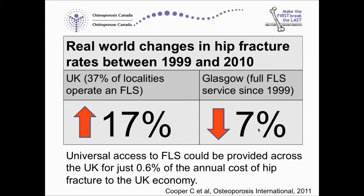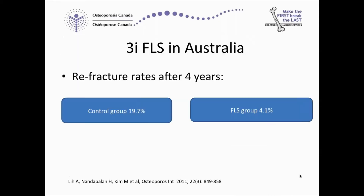This translated into real-world changes in hip fracture rates between 1999 and 2010. In the UK where only about a third of the localities were operating an FLS, there was a 17% increase in hip fracture rates, compared to Glasgow, which had a fully implemented FLS service since 1999, having a 7% drop. A cost-effectiveness analysis suggested that the UK could get universal access to FLS for just 0.6% of the annual cost of hip fracture to the UK economy.